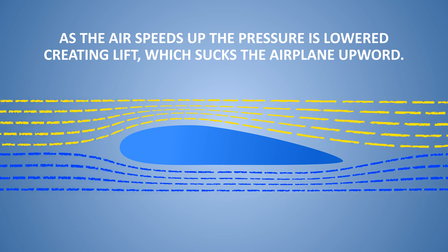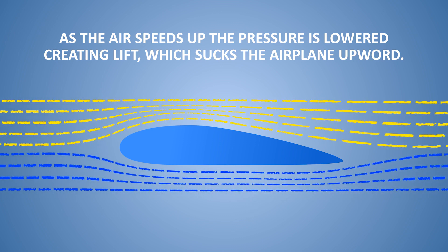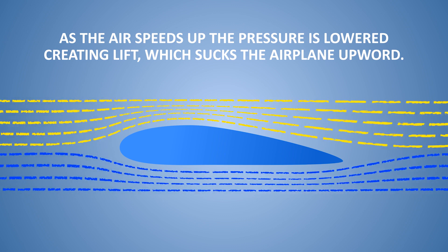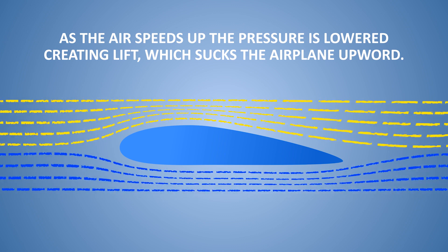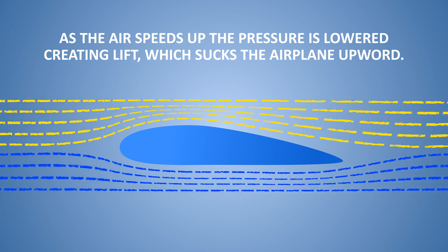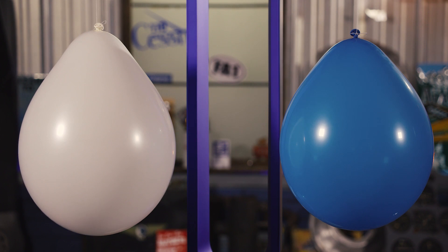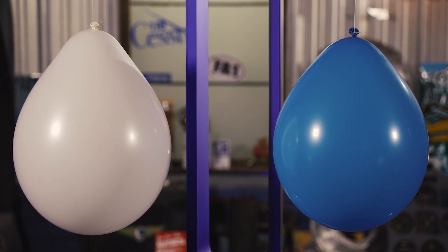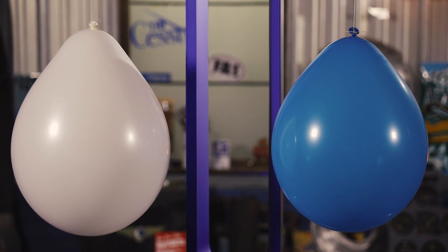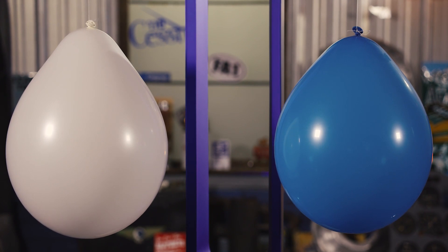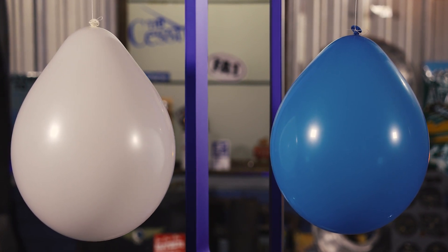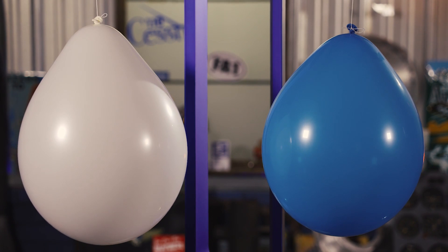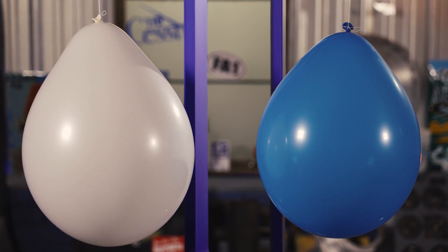The air goes faster over the top of the wing because it has to go further, and thus it creates lift which sucks the airplane upward. I can demonstrate Bernoulli's principle by blowing with this fan between these two balloons. These two balloons are hanging from strings — think of them as representative of our airplane wings since they have a curved surface.